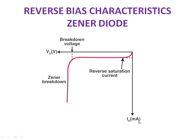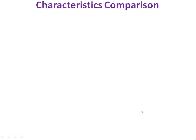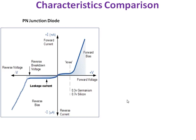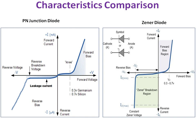Look at the scale — it is in milliamperes. But in the previous case, in the PN junction diode, the reverse bias current is in microamperes. Now let us compare the VI characteristics of the PN junction diode and the Zener diode.